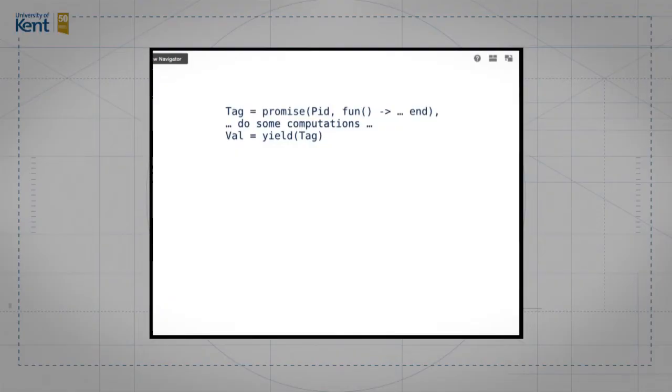So how would you use that? Something like that. You'd say tag is a promise. You give it some function. It's going to compute. You do some computation. When that computation is over, you can say value is yield of tag.